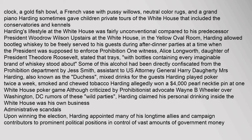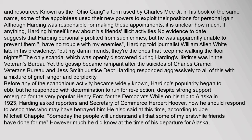Upon winning the election, Harding appointed many of his long-time allies and campaign contributors to prominent political positions in control of vast amounts of government money and resources — known as the Ohio Gang. Some of the appointees used their new powers to exploit their positions for personal gain. Although Harding was responsible for making these appointments, it is unclear how much, if anything, Harding himself knew about his friends' illicit activities. No evidence suggests that Harding personally profited from such crimes, but he was apparently unable to prevent them. He told journalist William Allen White: 'I have no trouble with my enemies, but my damn friends — they're the ones that keep me walking the floor nights.'